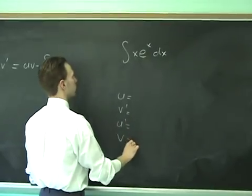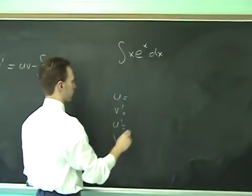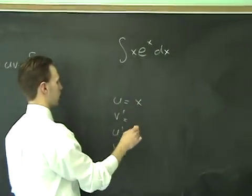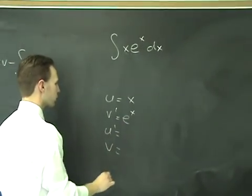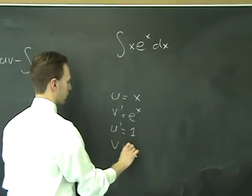So we have these here. So we're going to let x be the one that we differentiate, that's u, and v-prime will be e to the x. So then u-prime is one, v is, again, e to the x.